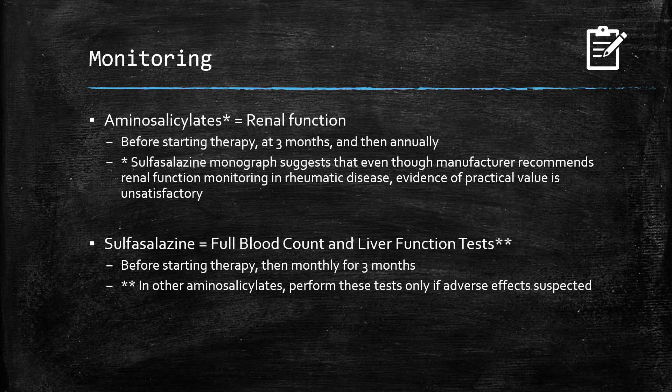In terms of monitoring with aminosalicylates, renal function is quite important before starting therapy, at three months, and then annually. However, the sulfasalazine monograph suggests that even though the manufacturer recommends it in rheumatic disease, evidence of practical value is unsatisfactory. I would still recommend testing renal function with all aminosalicylates in all conditions, but be aware of that sulfasalazine exception in rheumatic disease.